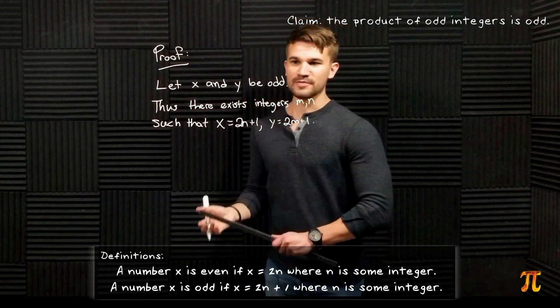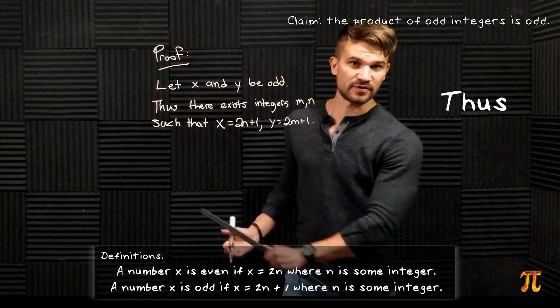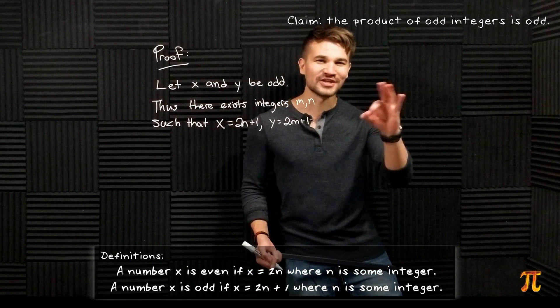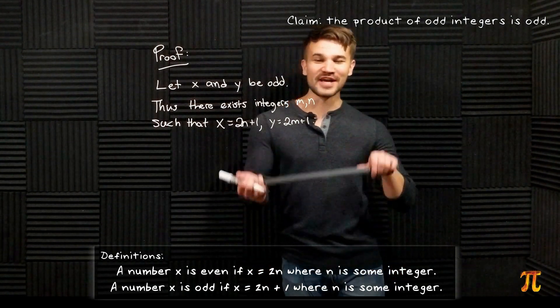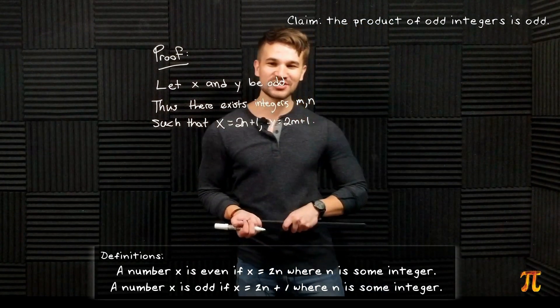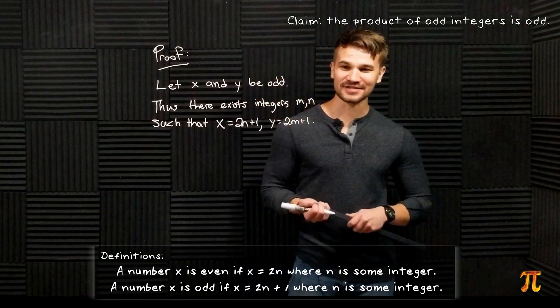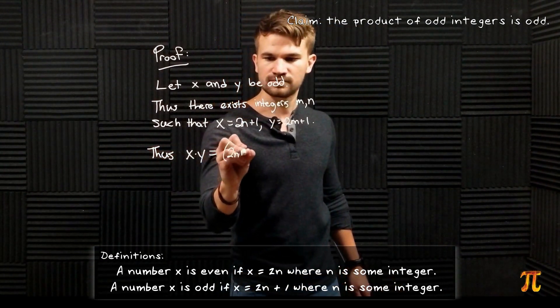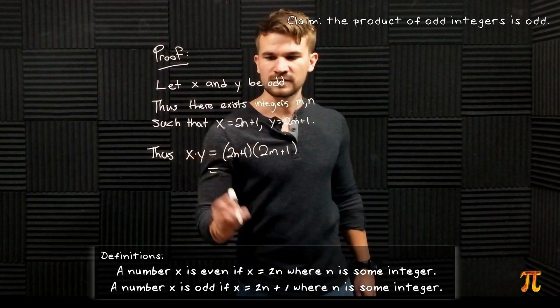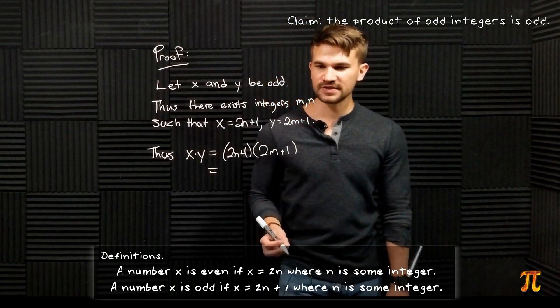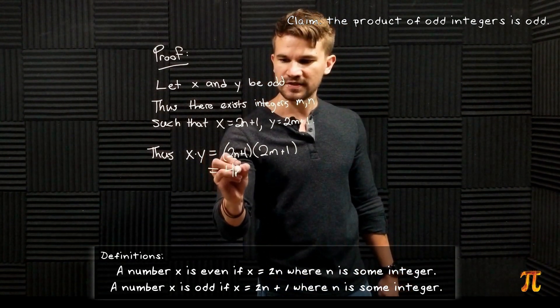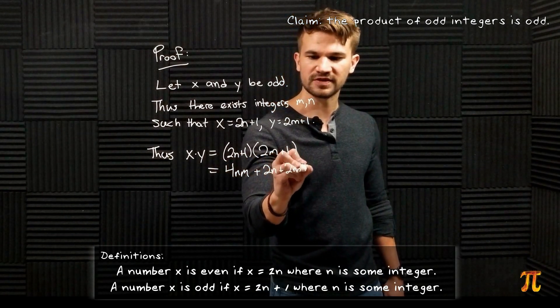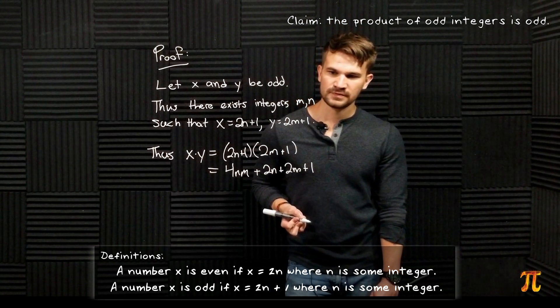It's very important to master the usage of these words like thus, hence, therefore - it really makes the proof, puts the final touches on the proof, you know what I mean? Okay anyway, we have these two expressions for the numbers that are odd, x and y, so let's take their product. Now we multiply this out and we get 4nm + 2m + 2n + 1.